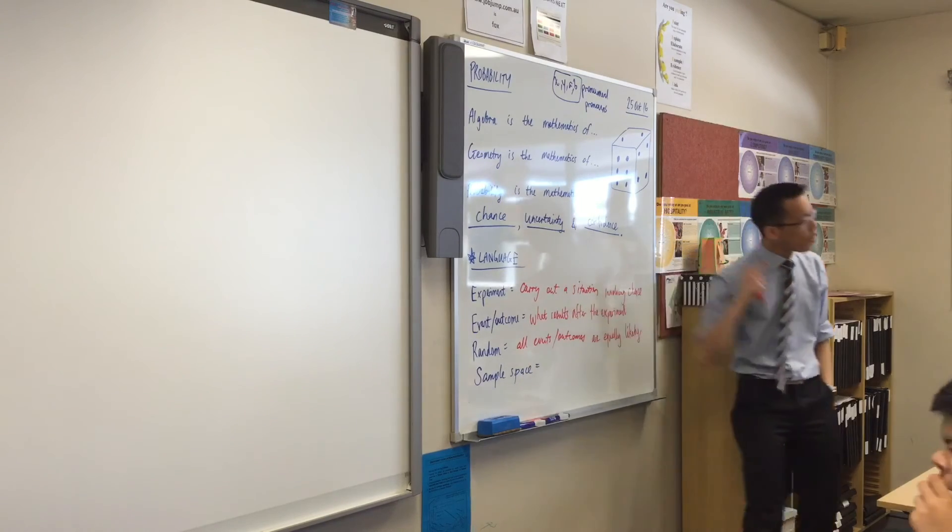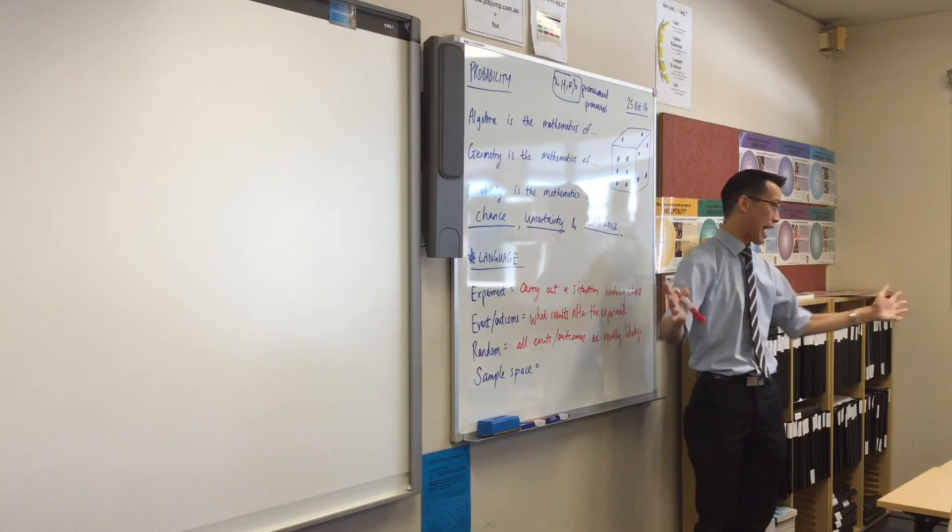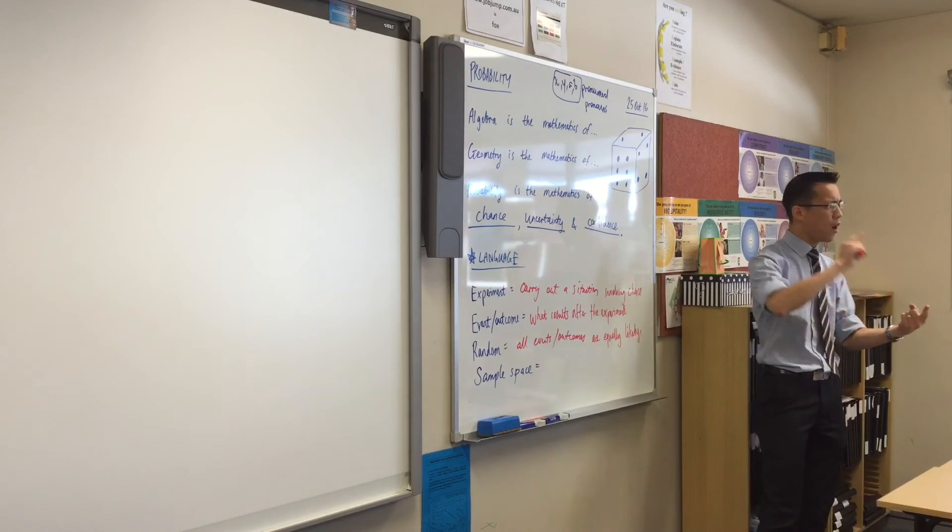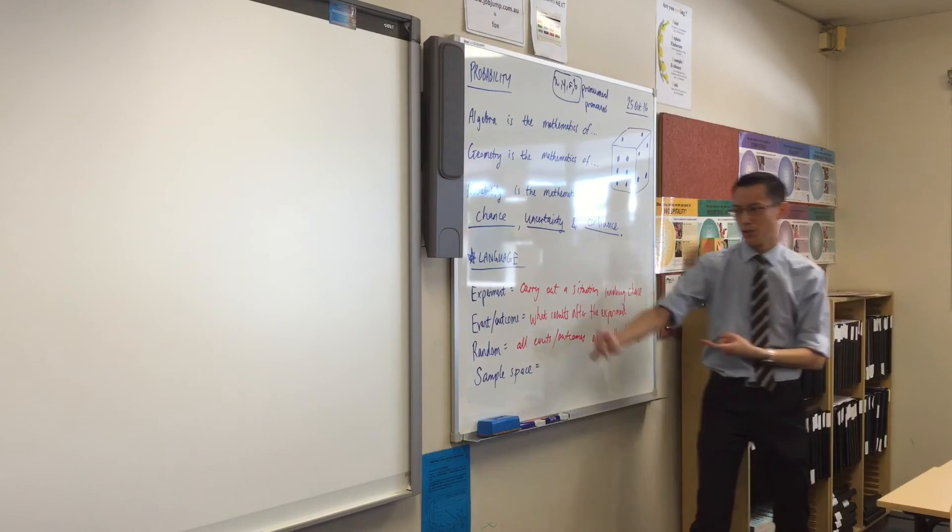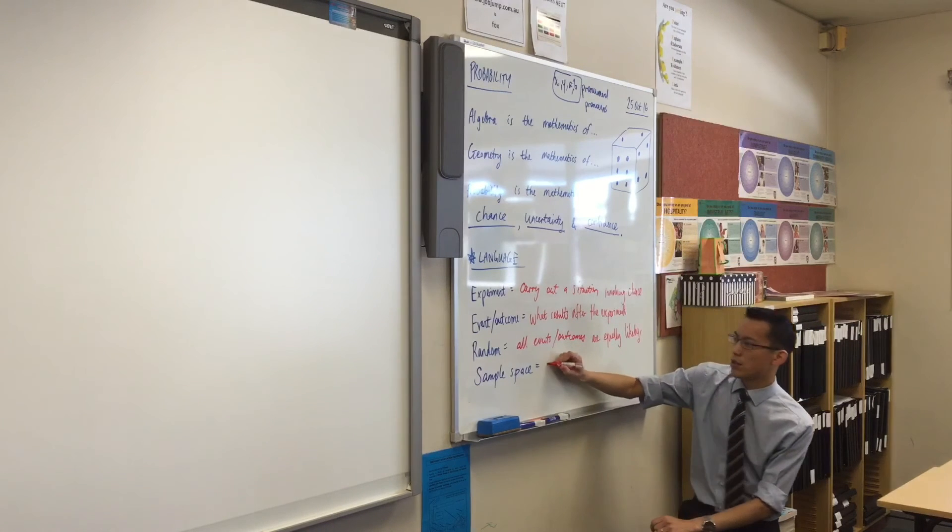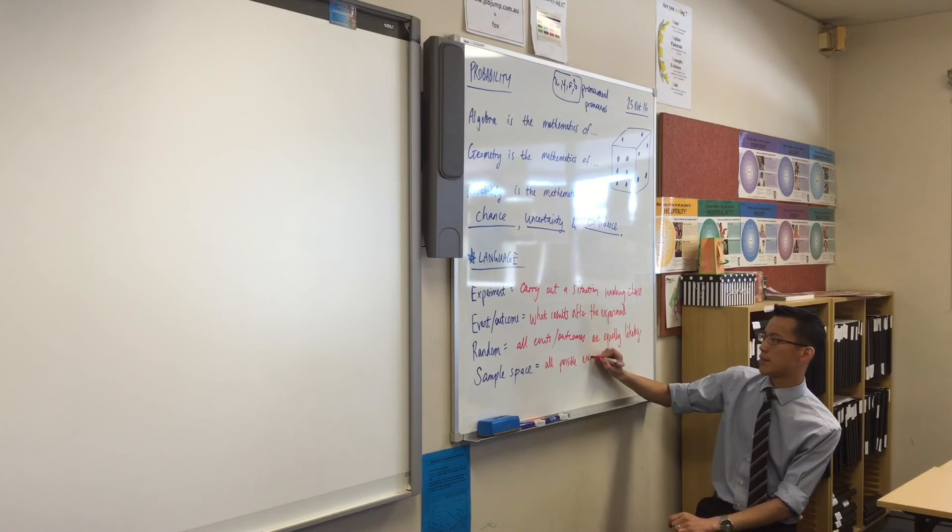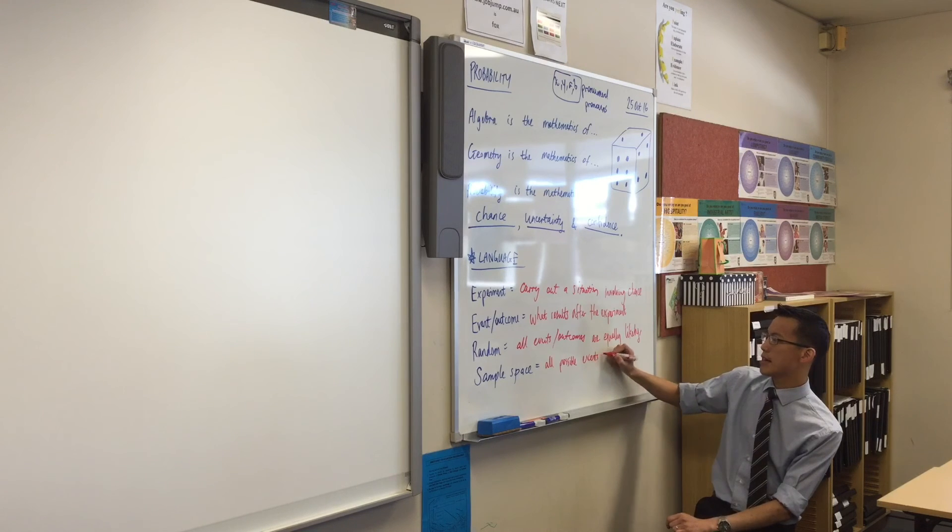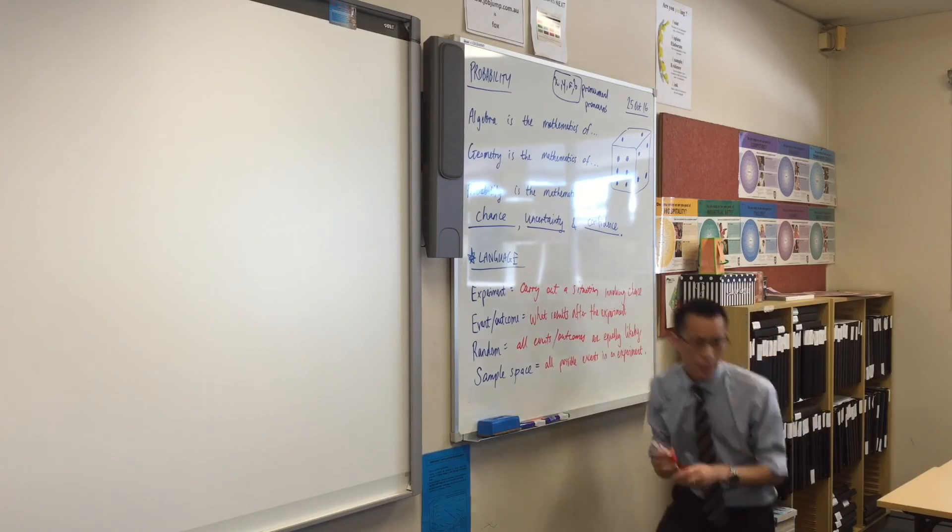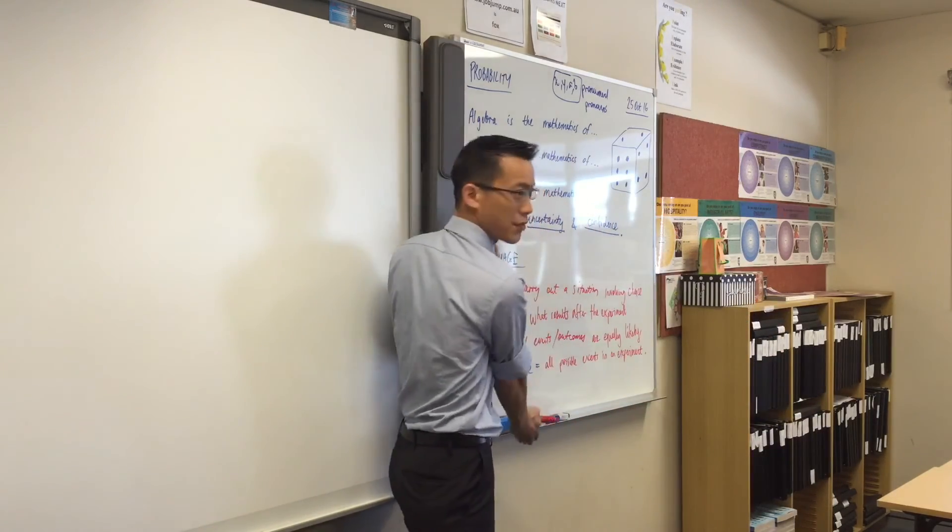Sample space means, what are all the different events or outcomes that could possibly happen in this experiment. Let me repeat that and I'll write it for you. What are all the possible events or outcomes in any given experiment? Okay? So, this is all possible events in an experiment.